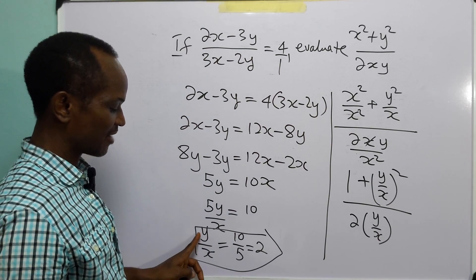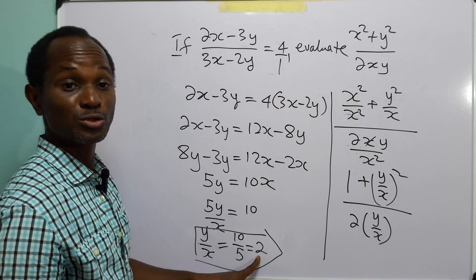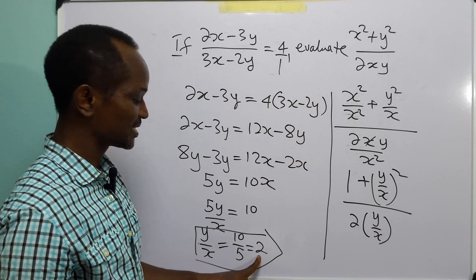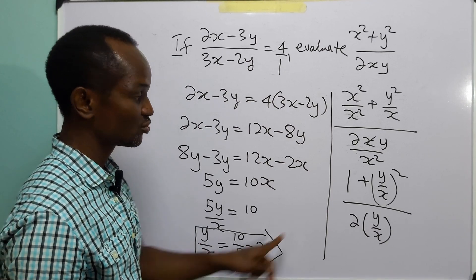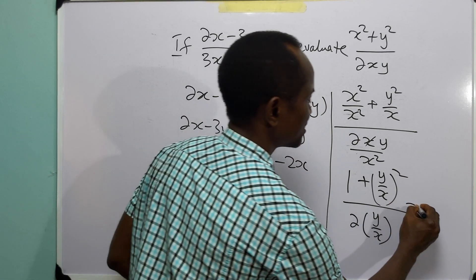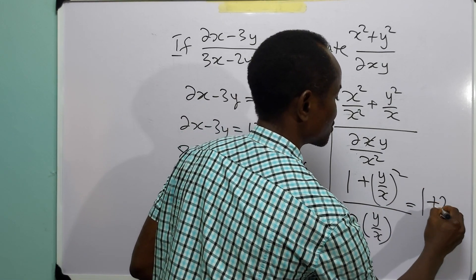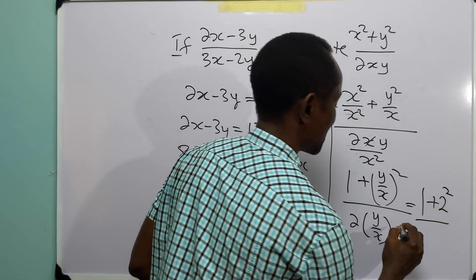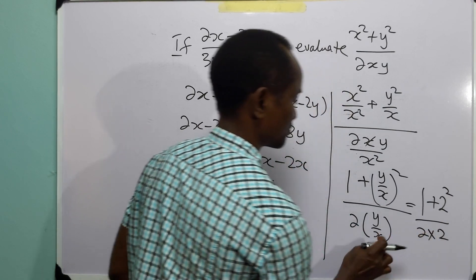But remember that already we have that y over x is equal to 2. So what we do is simply substitute 2 here, wherever we see y over x. So this gives us 1 plus 2 squared divided by 2 times 2.